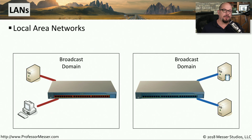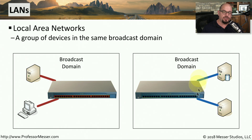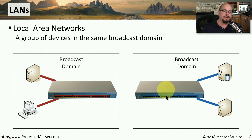A LAN is a local area network. We define this as a group of devices that happen to share the same broadcast domain. For example, we have two switches on our network — the switch on the left, and all of the devices connected to that switch are one broadcast domain. And we have a switch on the right, and the devices connected to that switch are on a different broadcast domain. We often maintain the separation between different local area networks for security reasons and to maintain the efficiency of the network, but this also means we would have to have a separate switch every time we wanted to have a separate broadcast domain.